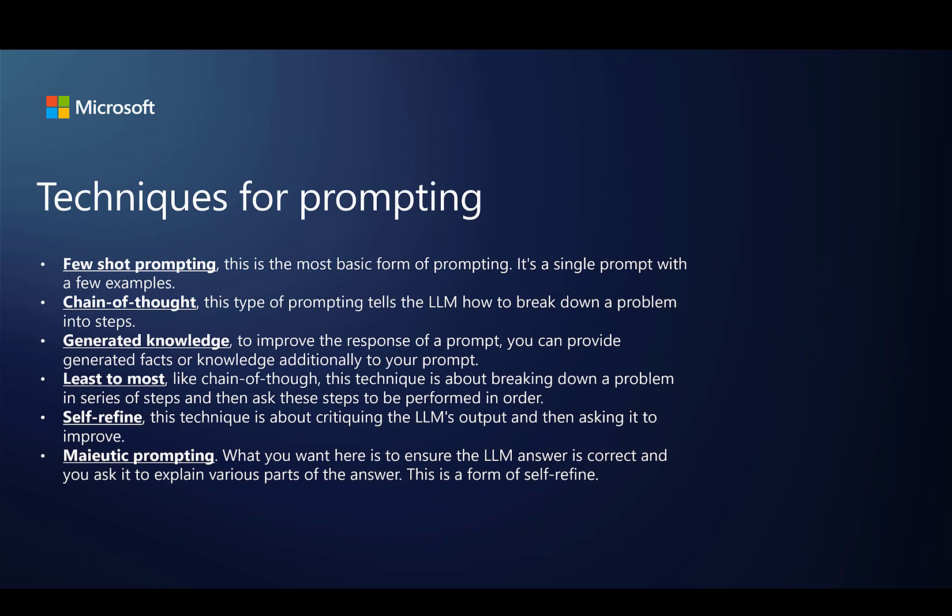We'll talk about six different techniques. I want to present them first at a high level. First, you have few-shot prompting, which is your most basic form of prompting — you create a prompt and you get a response back. The other technique is chain of thought, which is how you help the LLM break down a problem: you tell it to solve the problem in a specific way. This increases the likelihood that the LLM is actually doing calculations correctly, and you'll see an example of that as part of this presentation. The third technique is generated knowledge, which involves bringing in data from your company or organization.